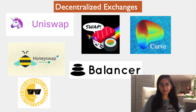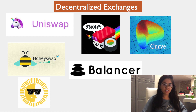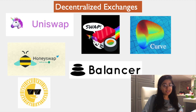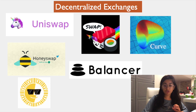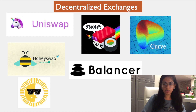Hey guys, today we will be talking about decentralized exchanges. A lot of them have recently popped up, such as Uniswap, SushiSwap, Curve, Balancer, HoneySwap, even Sun. For each platform there's a strong community, and we're going to be talking about the fundamentals of how the liquidity pool works.